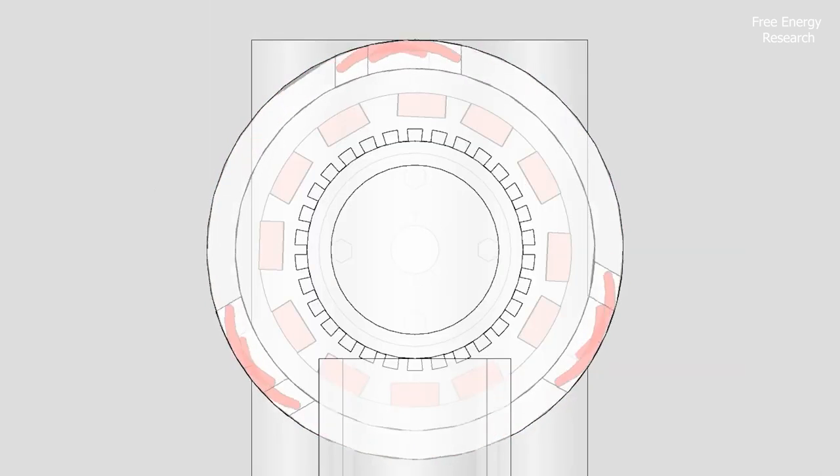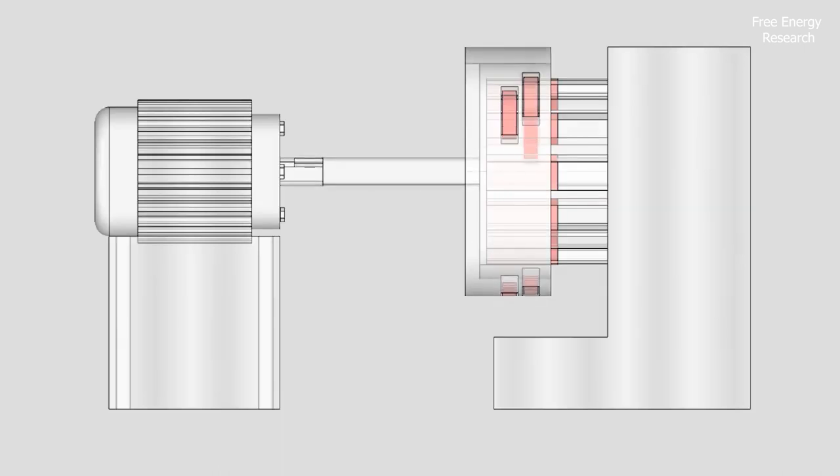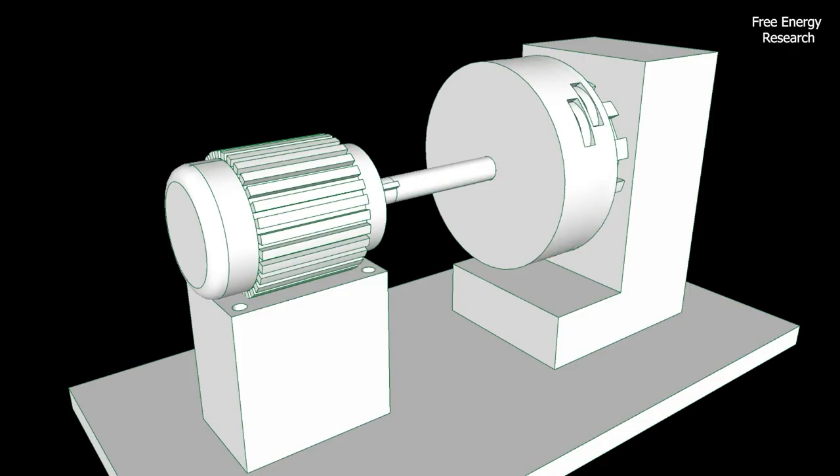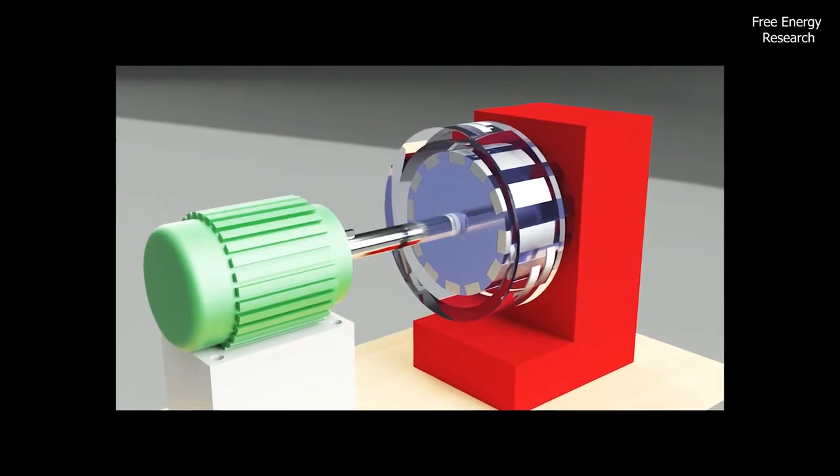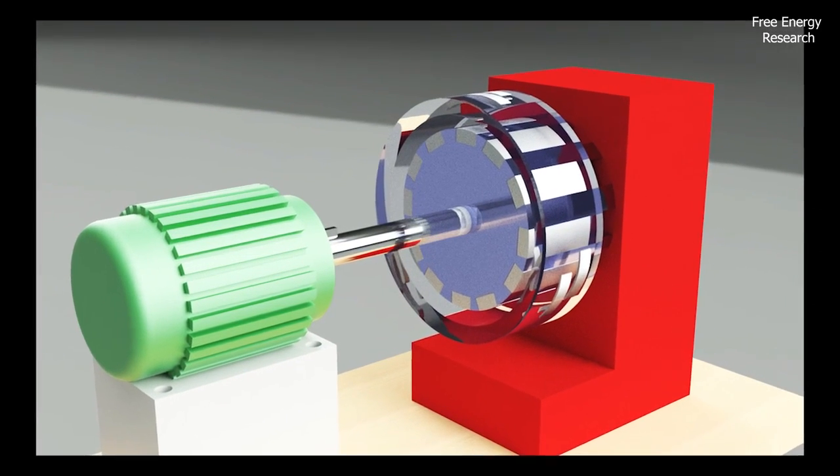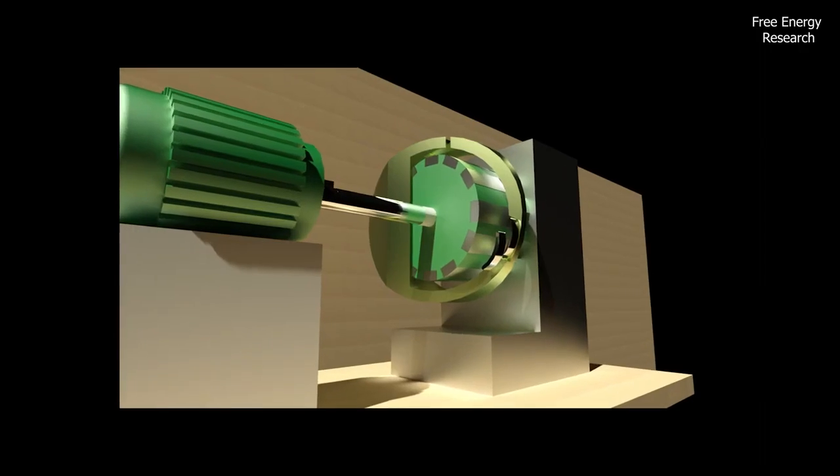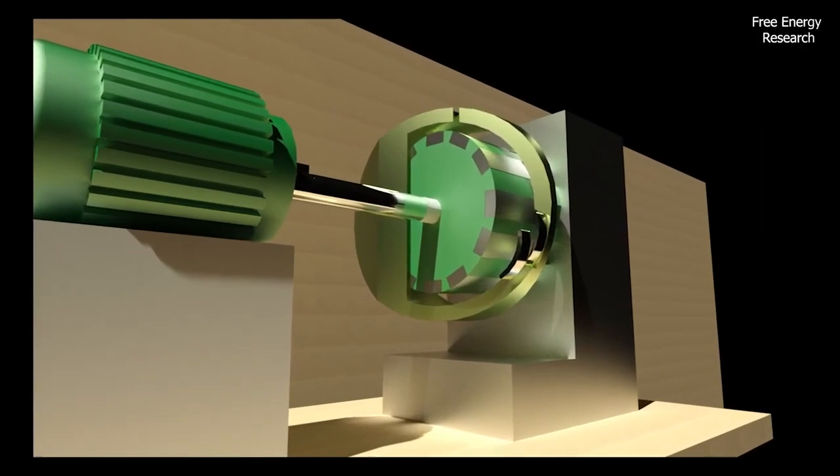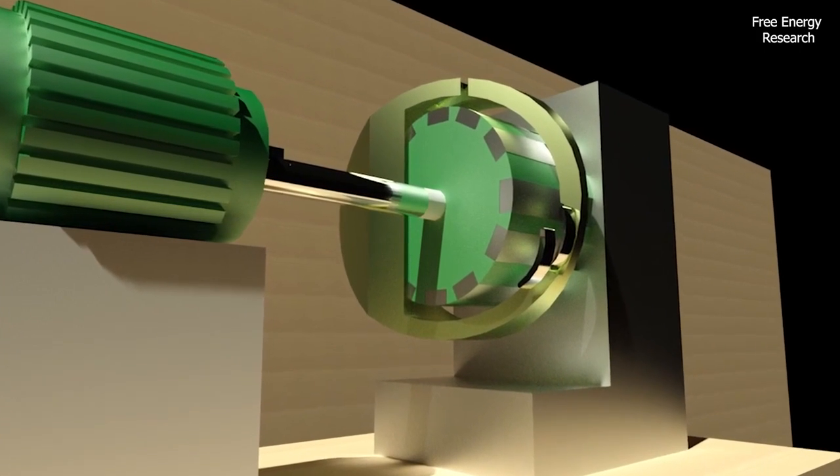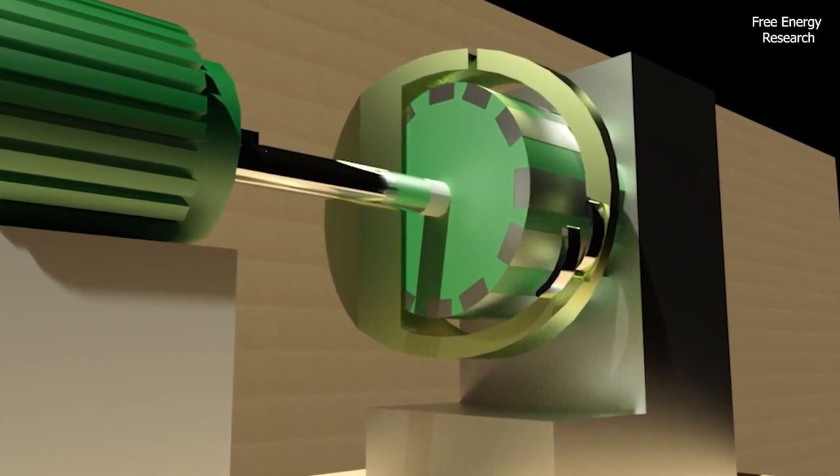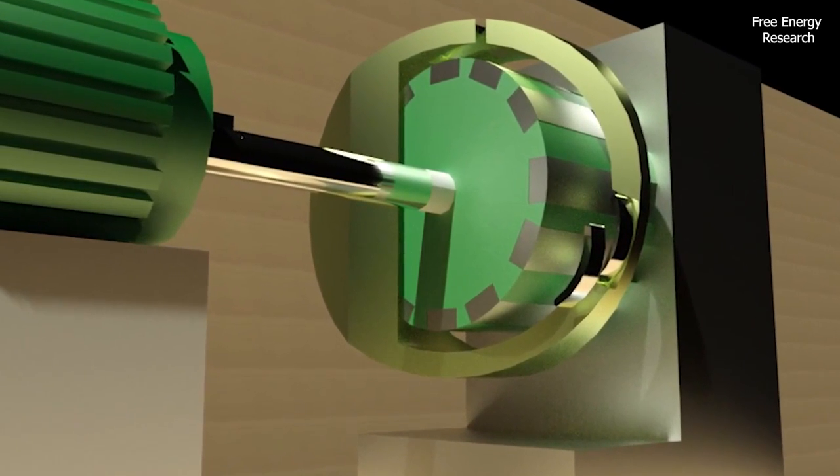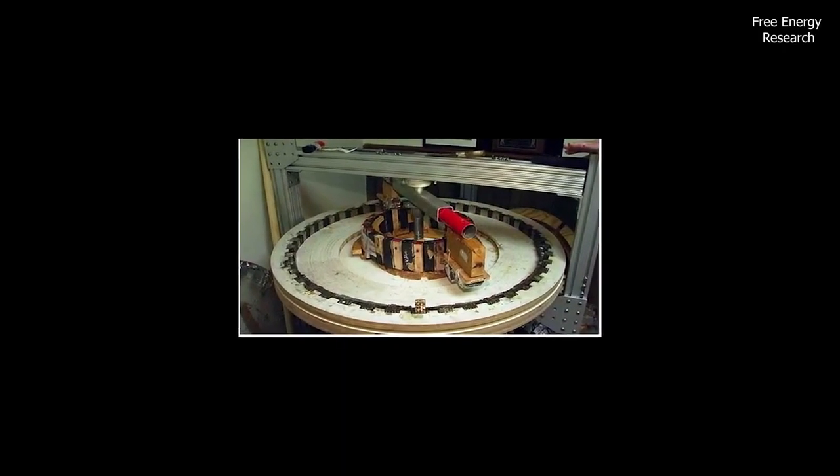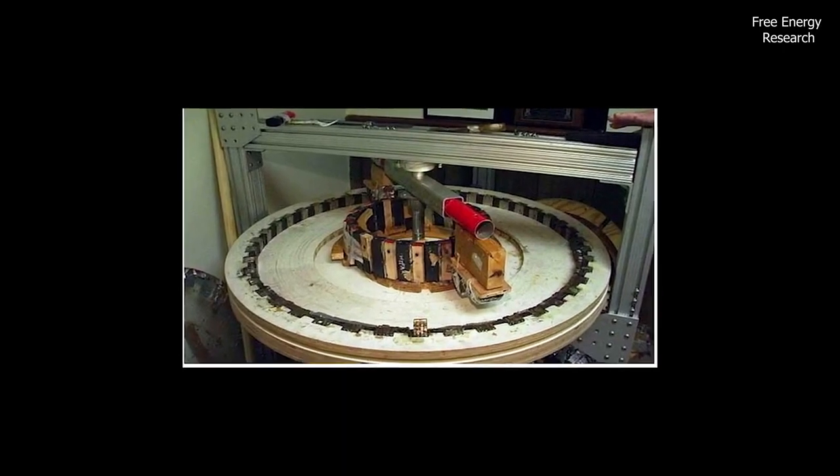Johnson was a charismatic and passionate inventor who dedicated much of his life to advancing his magnet motor technology. He actively sought funding and support for his projects, delivering presentations and demonstrations to various audiences. Despite the skepticism surrounding his work, Johnson maintained a loyal following of supporters who believed in the potential of his magnet motor technology. He continued to refine his designs and conduct experiments throughout his life.